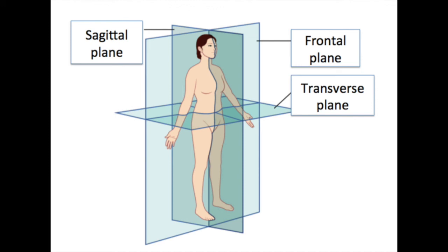Our last gross anatomical topic refers to the planes and sections used when dissecting in the lab. There are three primary sections. A sagittal section cuts the body into a right and a left piece. A frontal section cuts something into an anterior and a posterior piece. A transverse section, also called a cross section, cuts something into a top and a bottom piece — or a superior and inferior piece — unless you're talking about an appendage, in which case it would be proximal and distal.